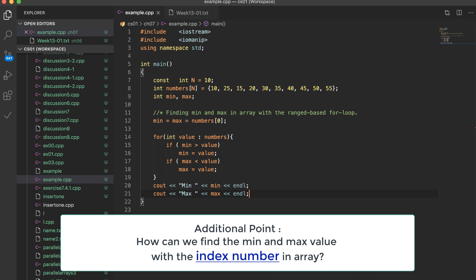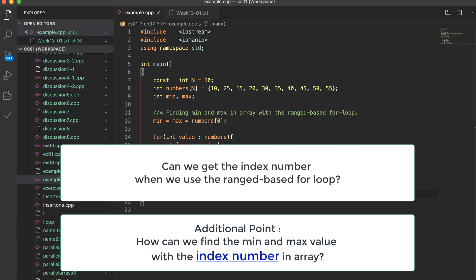Here is one more requirement. Find the min and max value with the index number together. Can we get the index number when we use the range-based for loop? The answer is no. We need to use the regular for loop to find the min value and also its index number.